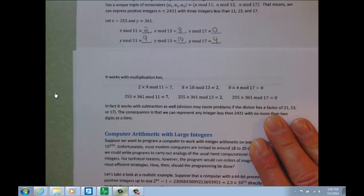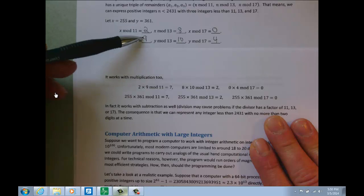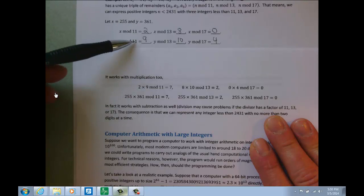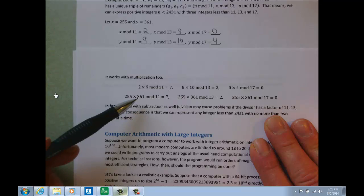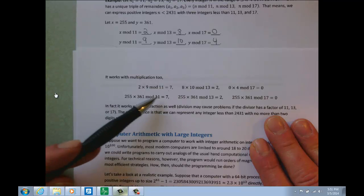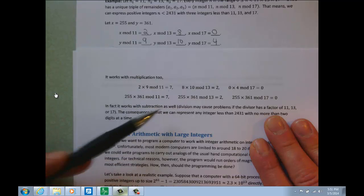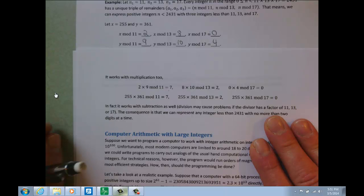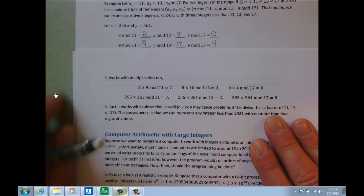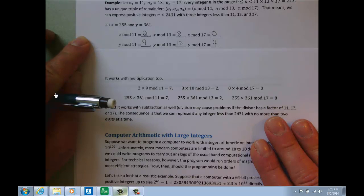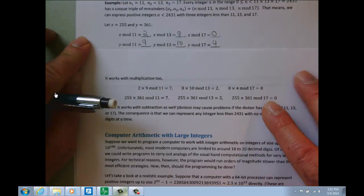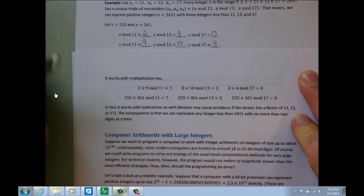The same pattern will be observed with multiplication. If we took the remainders 2 and 9, multiplied them together and reduced modulo 11, we get 6. If we took the original values 255 and 361, multiply them and then reduce modulo 11, we get a 7. The same thing will happen modulo 13 and modulo 17. What that means is for addition and multiplication, we can represent 255 and 361 by the remainders modulo 11, 13, and 17. But more than that, once we have the remainders, we can do arithmetic on the remainders rather than arithmetic on the original numbers and then reduce to the remainders.